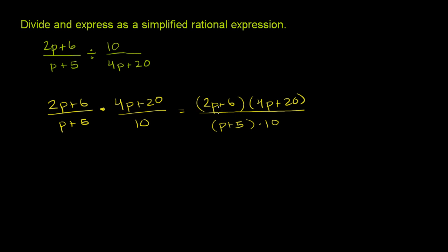So 2p plus 6, we can factor 2 out. We can rewrite 2p plus 6, if we factor 2 out, as 2 times p plus 3. That's this term right over here.